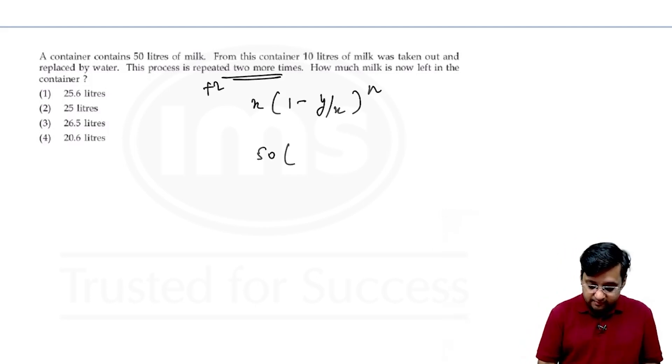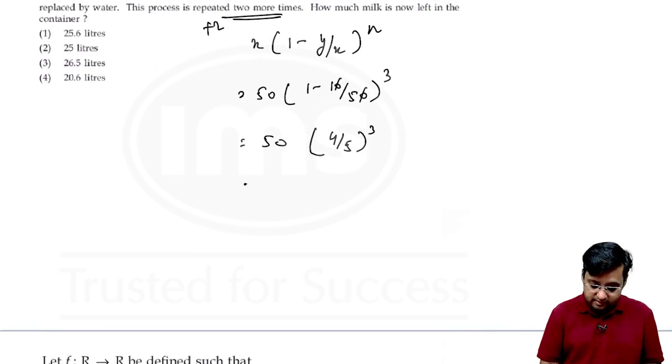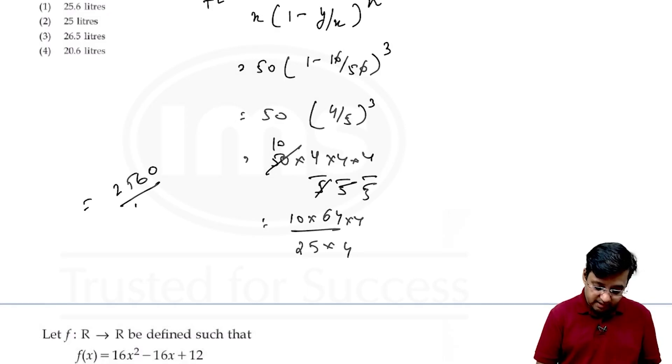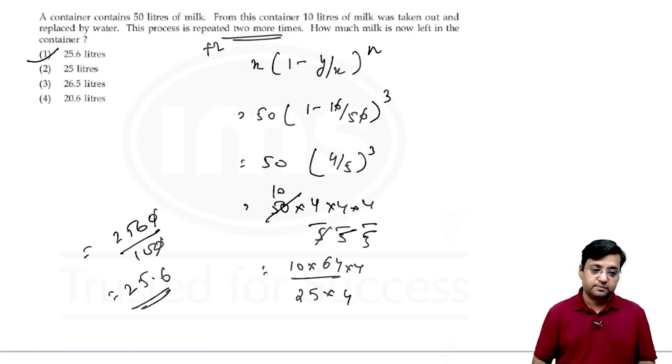That means it will be 50(1 minus 10 by 50) to the power 3. Now this becomes 50, 4 by 5 cube. This becomes 50 into 4 into 4 into 4 by 5. That will become 10. This becomes 1 and we have 10 into 64 by 25. If you multiply by 4 you will get 256 by 100 which will give you 25.6 which is our first option. Correct?